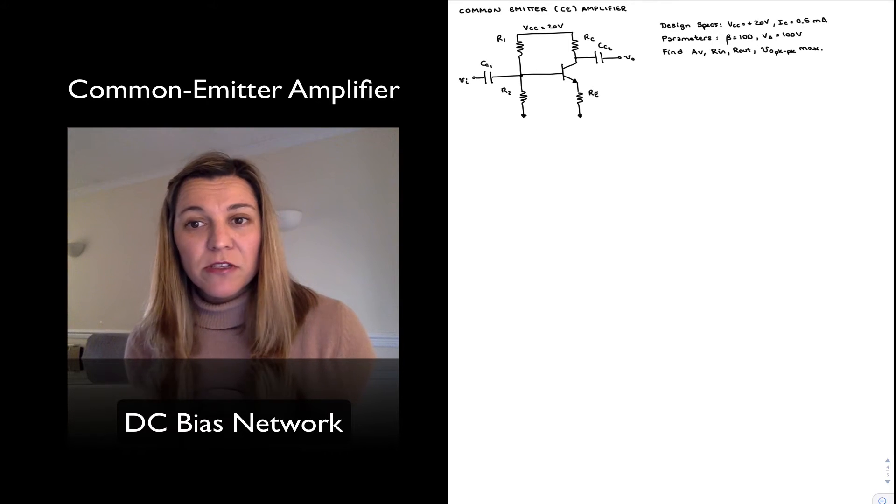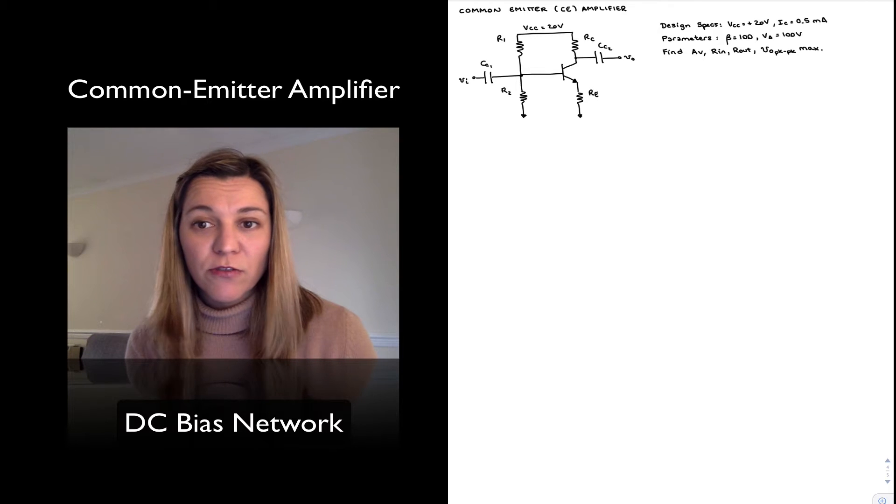The addition of the emitter resistor for biasing purposes though does not change the configuration of the circuit, it's still a common emitter amplifier.